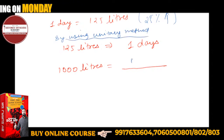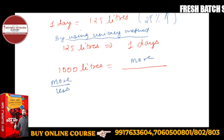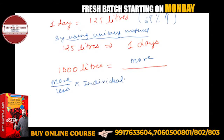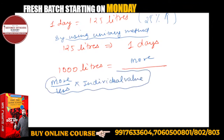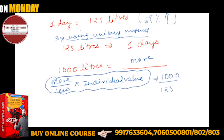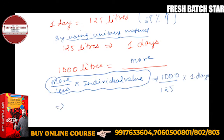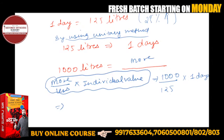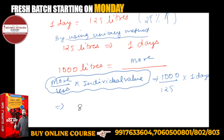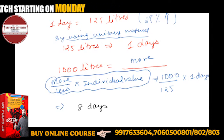More by less into individual value. What is more here? 1000. What is less here? 125. Into one day — so the answer will come in days. 1000 divided by 125 gives 8. So 8 days is the right answer. Very good, 8 is the correct answer.